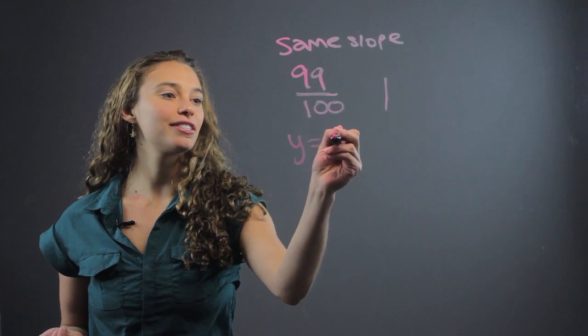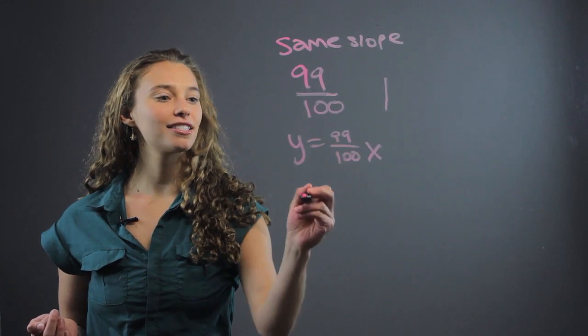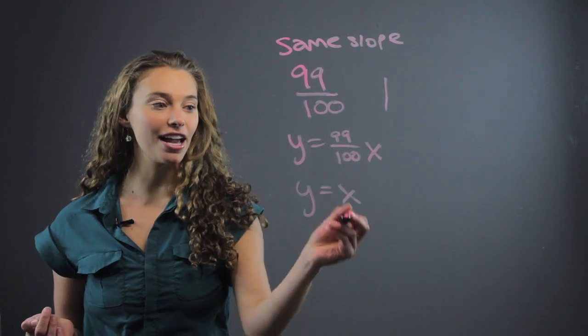So y equals 99 over 100 times x and y equals x, right?